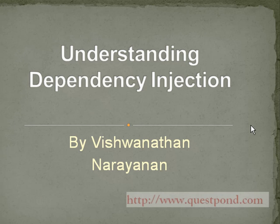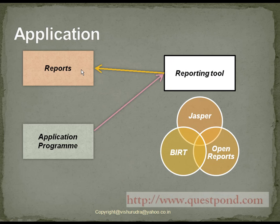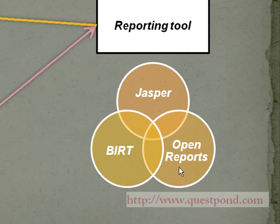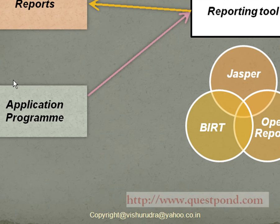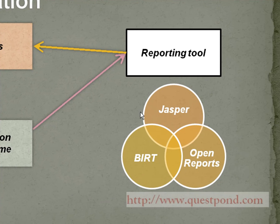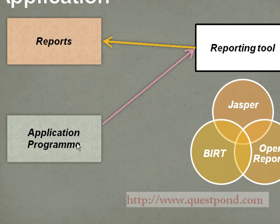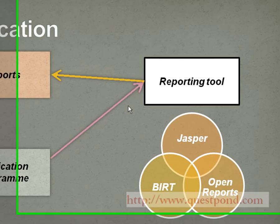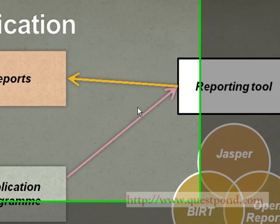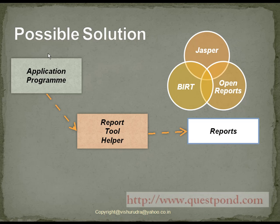Let's understand dependency injection. To know about dependency injection, let's take an example. We are going to develop an application for reporting by using reporting tools like Jasper or OpenReport. Our application program has to interact with the reporting tool to generate the reports. If our application program directly accesses this reporting tool, then it will be tightly coupled — meaning if tomorrow we have to replace Jasper with another tool, our application program has to change. This is the disadvantage of a tightly coupled solution.